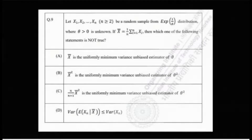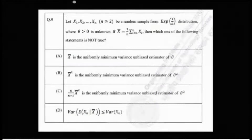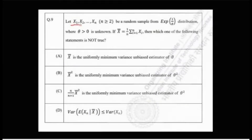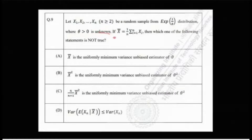Welcome to Chintha Statistics and Data Science. Today we are going to solve this problem from IIT JAM 2022, problem number 9. The problem says: let x1 through xn be a random sample from exponential(1/θ) distribution, where θ greater than 0 is unknown. If x̄ equals (1/n)·Σxi, i running from 1 to n — that means the sample mean — then which one of the following statements is not true?